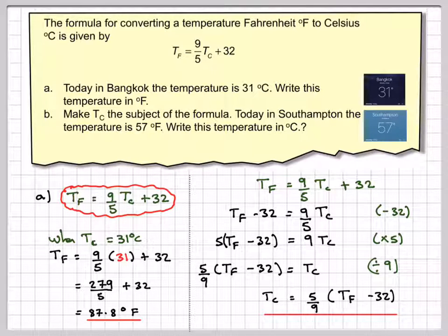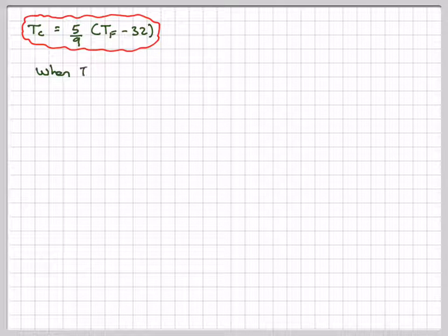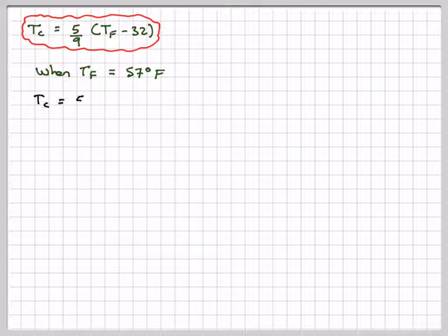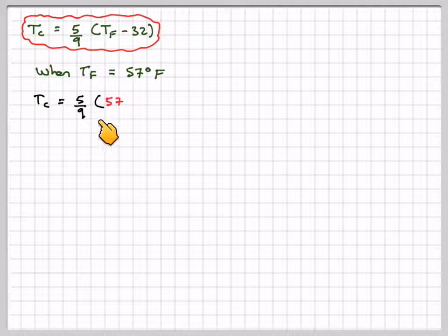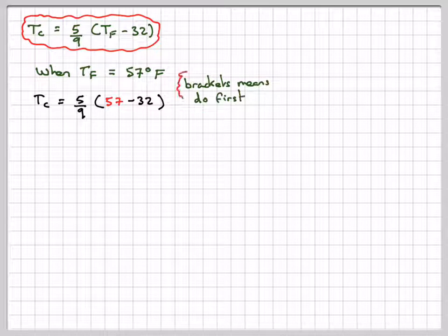We're now going to use this formula to find the temperature in Southampton, which is 57 degrees Fahrenheit. What will this temperature be in degrees C? Writing out our formula first—and always in mathematics, you should write out the formula first you're going to use—when Tf equals 57 degrees Fahrenheit, we've got Tc is 5 over 9, brackets 57, minus 32.